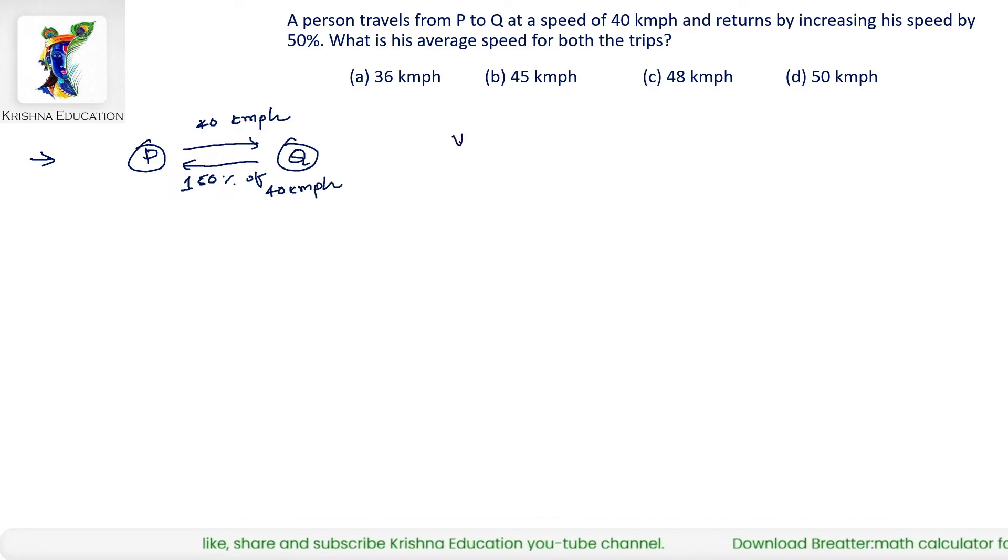So if we see here, V1 is 40 kmph and V2 is the return speed of 150% of 40 kmph, which is equal to 1.5 multiplied by 40 equals to 60 kmph.